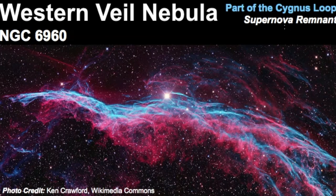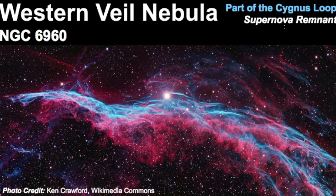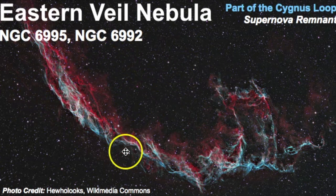The Cygnus Loop is broken down into parts. We have the Western Veil Nebula, NGC 6960 — you can see the movement happening and the shock waves moving in one direction, clearly demonstrating how gas is moving outwards. I often ask my students: in which direction do you think the gas is moving and why? The Eastern Veil Nebula is actually two different objects — NGC 6995 and NGC 6992 — again just part of that Cygnus Loop, with the gas moving in its own direction as well.